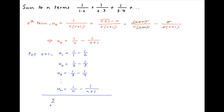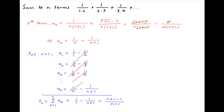Now add all of these equations. On the left-hand side, we have the summation of ur, r going from 1 to n, which is equal to Sn, the sum to n terms. On the right-hand side, note that alternate terms cancel, and we are left with only two terms. Therefore, the right-hand side is equal to 1 minus 1 upon n plus 1, which equals n plus 1 minus 1 upon n plus 1, giving n upon n plus 1.